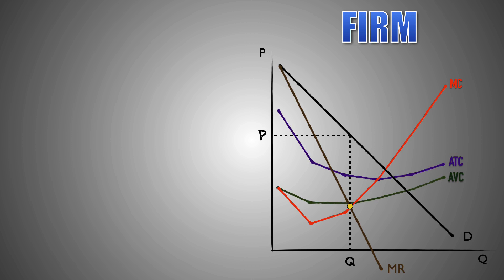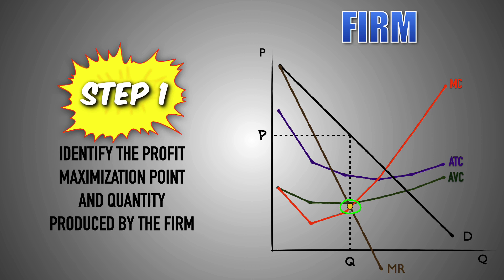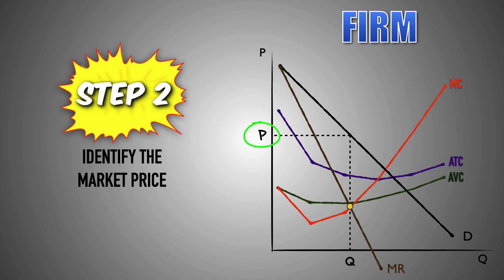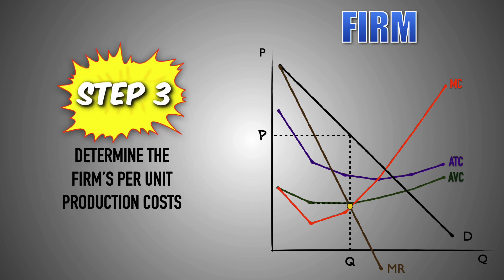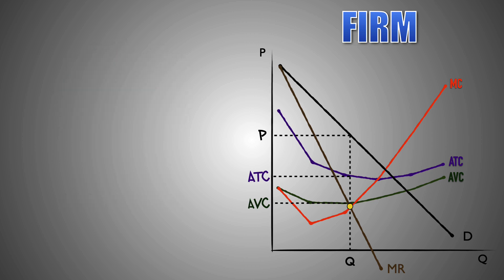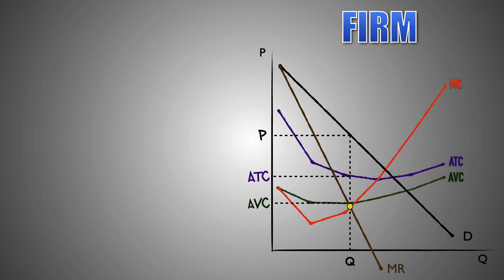From here, we can use the graph to determine revenue, costs, profits, and losses for the imperfectly competitive firm. We must first identify the firm's profit-maximization point. From here, we can determine the quantity of output that the firm will produce, as well as the market price that the firm will charge per unit, which is set entirely by the demand curve. We can then identify the firm's variable cost per unit, where the quantity line intercepts the AVC curve, and the total cost per unit, where the quantity line intercepts the ATC curve. From here, we can determine whether the firm is earning economic profit, taking economic losses, or breaking even.